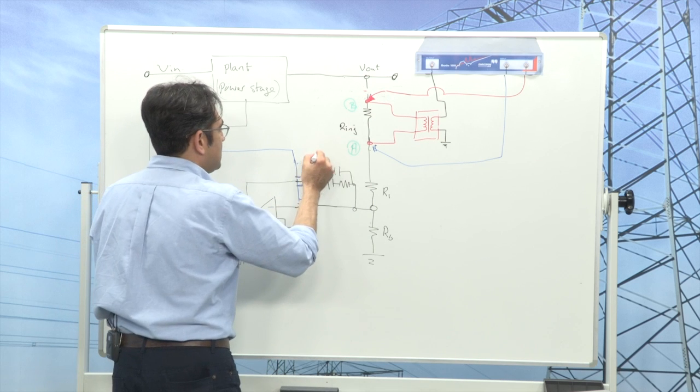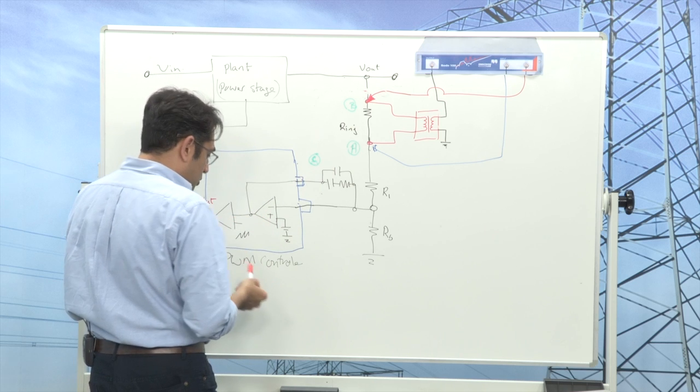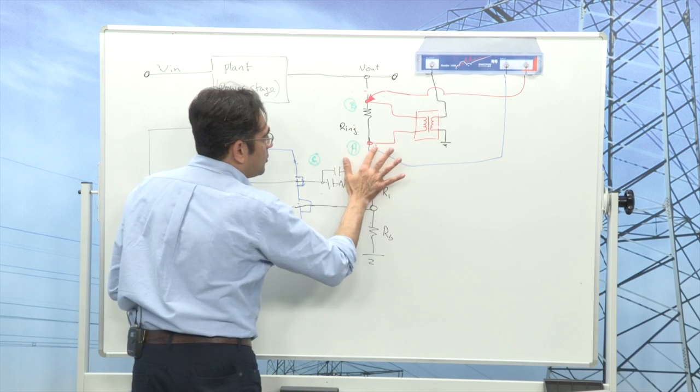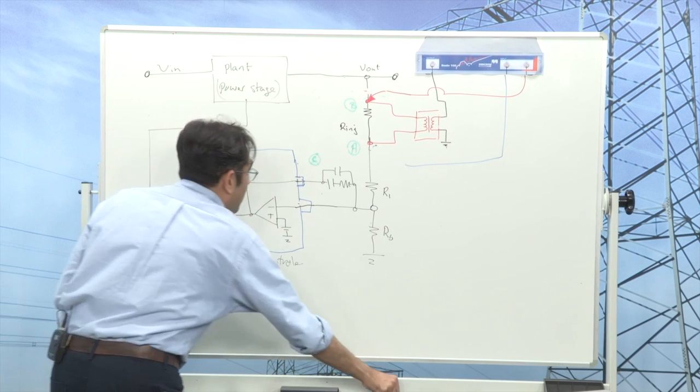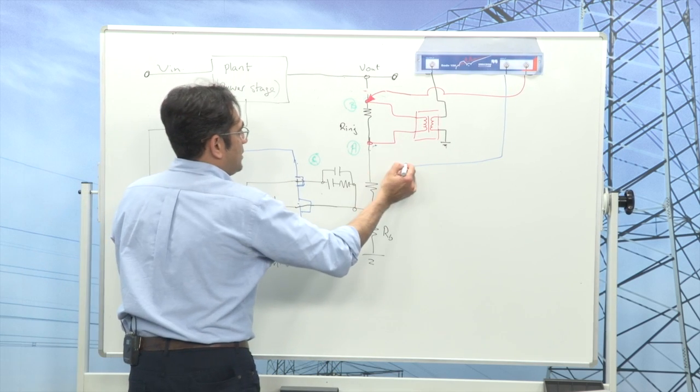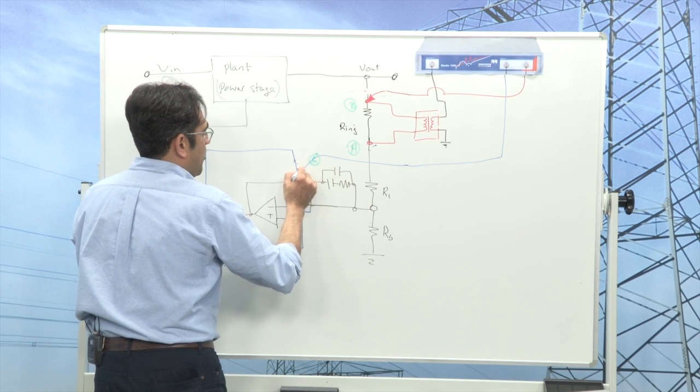Let's put C back in and now if I want to measure the plant all I have to do is remove this probe from that point and connect it to point C which happens to be the comp pin or the output of the op-amp of the controller.